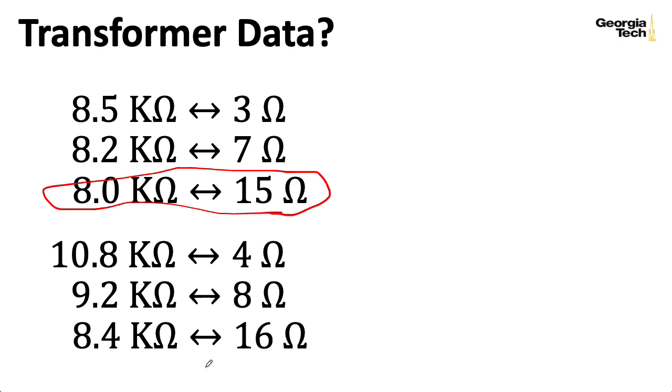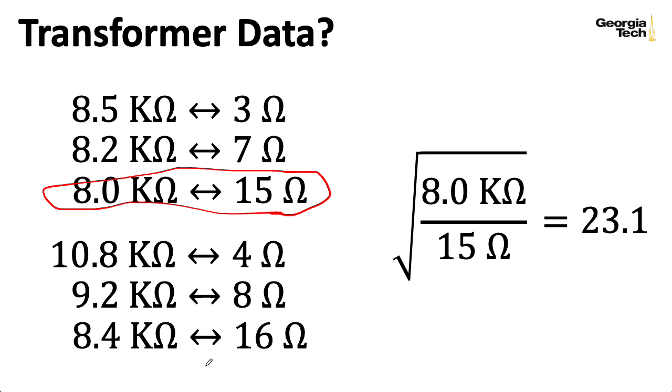You can redo the analysis for these other pairs if you want. Overall, you'll get similar results. In any case, I computed the turns ratio for this, which is the square root of the reflected impedance over the speaker impedance as 23.1. That will come in handy later.